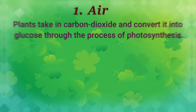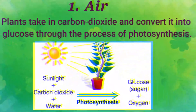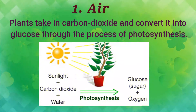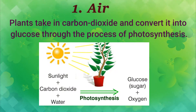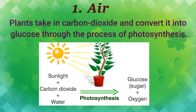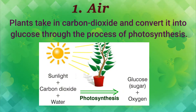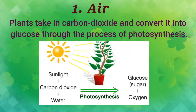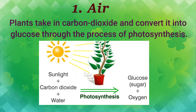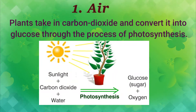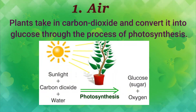The first basic need is air. How is air important for plants? Plants take in carbon dioxide from the air and convert it into glucose through the process of photosynthesis.